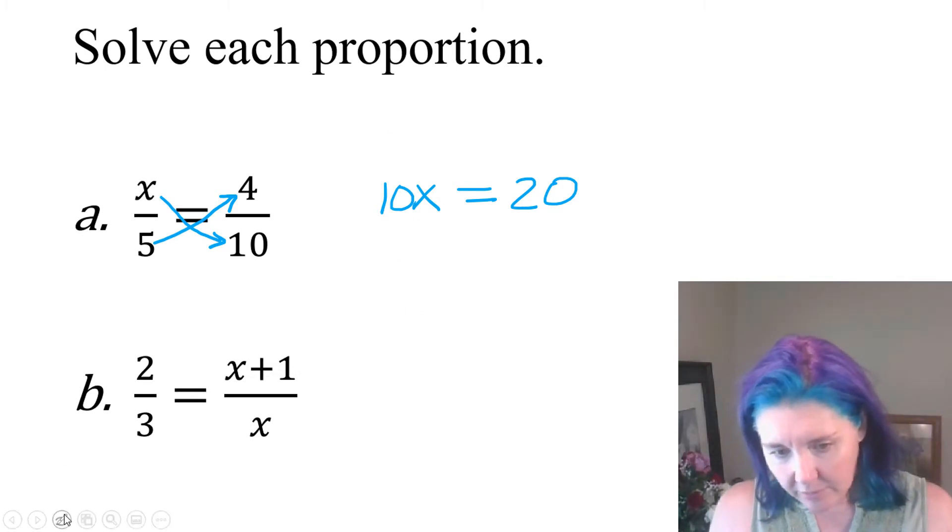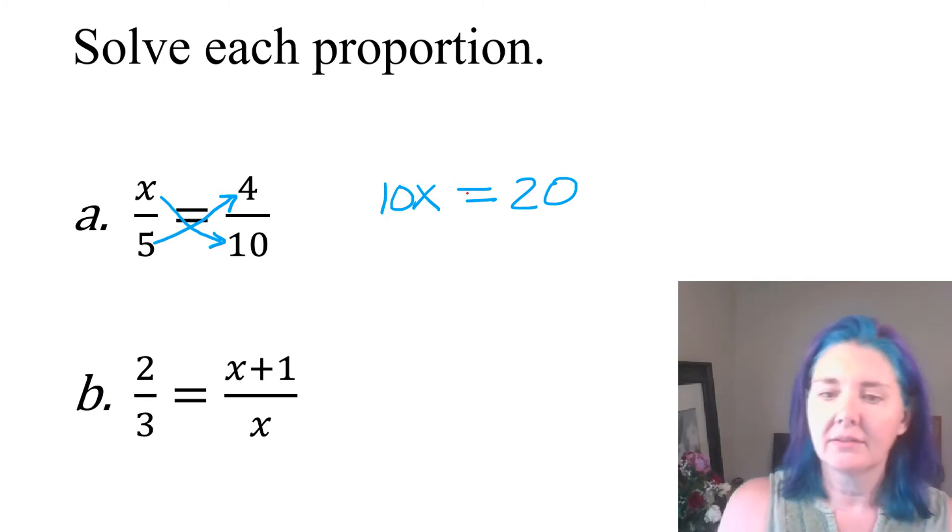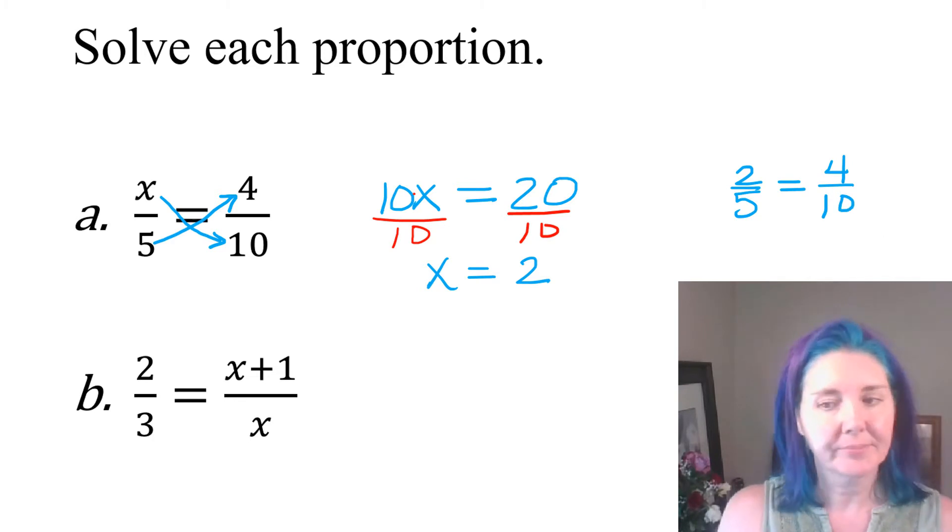You can then divide by whatever the coefficient of x is. The number being multiplied by x is called the coefficient. We're going to divide by 10 in this case. So we're going to get x is equal to 2. And that makes sense, right? Isn't it true that 2 fifths is equal to 4 tenths? All right, so that worked.